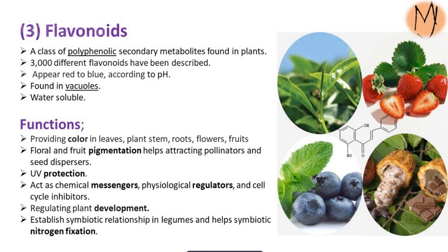The next category of pigments is flavonoids — a class of polyphenolic secondary metabolites found in plants. Around 3,000 different flavonoids have been described. They appear in colors ranging from red to blue depending on pH, and can be found in vacuoles, making them water-soluble. Flavonoids provide color to leaves, plant stems, roots, flowers, and fruits, helping attract pollinators and seed dispersers. They also aid in UV protection by absorbing light in UV wavelengths — their biosynthesis is generally activated after UV exposure, which is why more flavonoids accumulate after UV radiation. They further act as chemical messengers and physiological regulators.